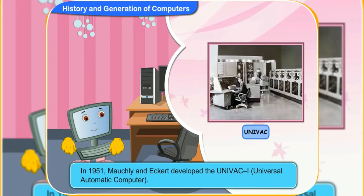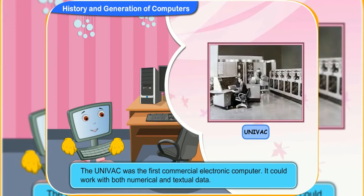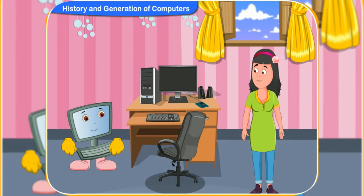What about the UNIVAC? In 1951, Mauchly and Eckert developed the UNIVAC-1, which stands for Universal Automatic Computer. The UNIVAC was the first commercial electronic computer and could work with both numerical and textual data.